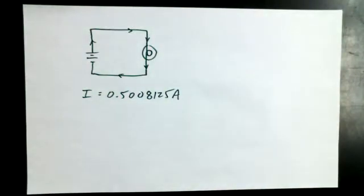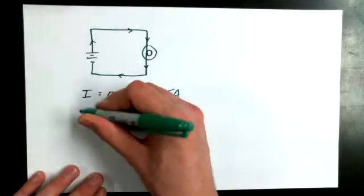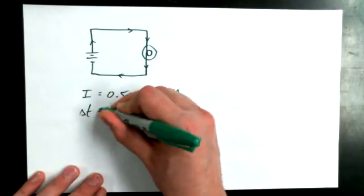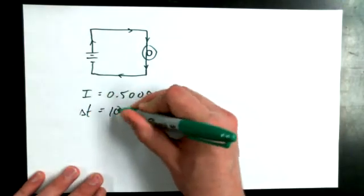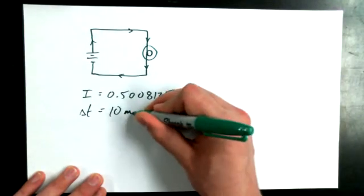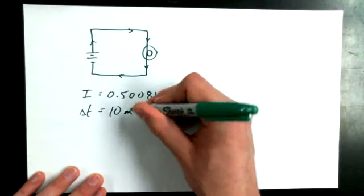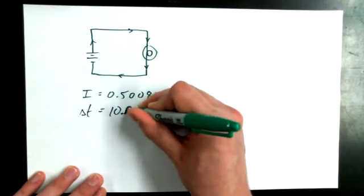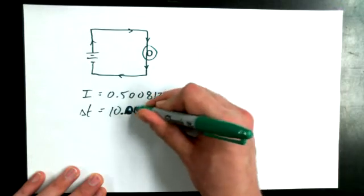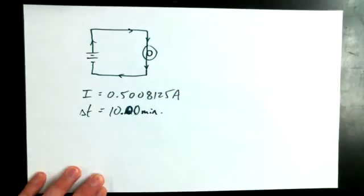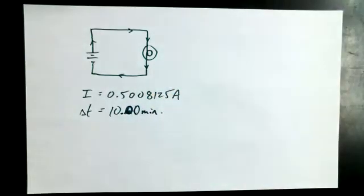Let's say that this circuit is left on for a total of 10 minutes — let's make it nice significant figures: 10.00 minutes. Somebody leaves the light switch on for 10 minutes.